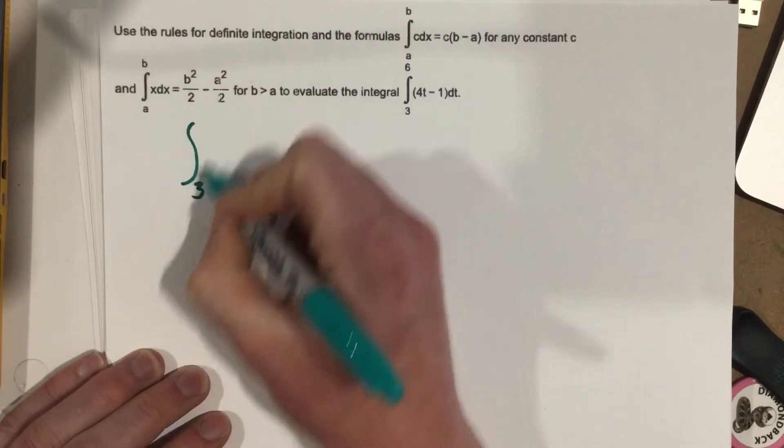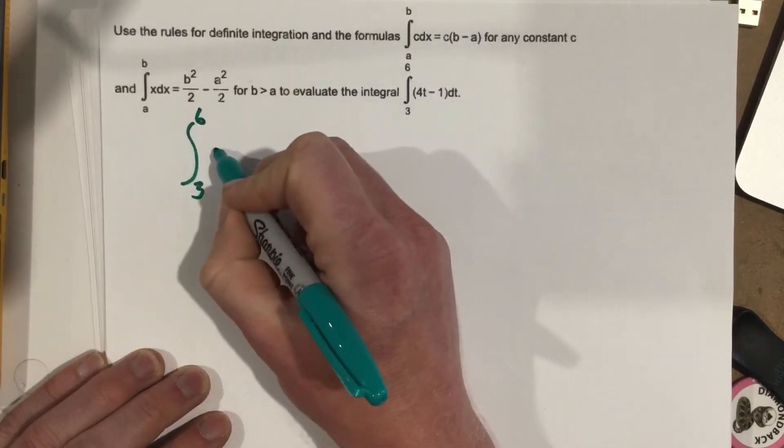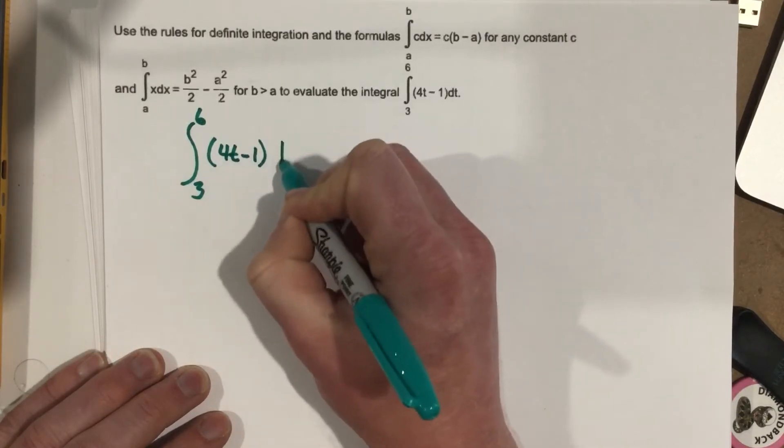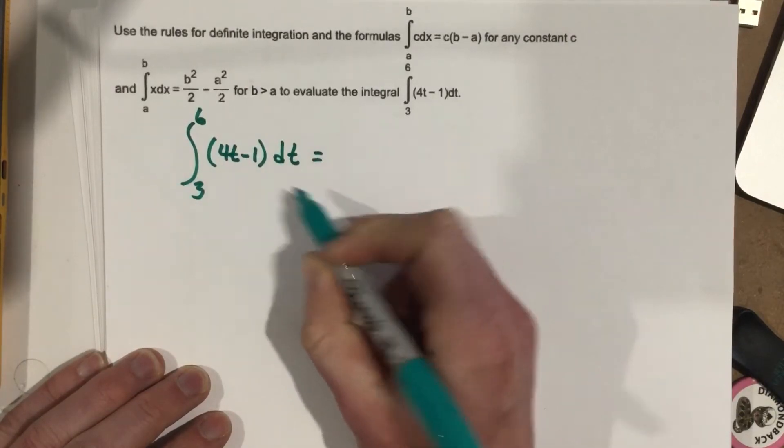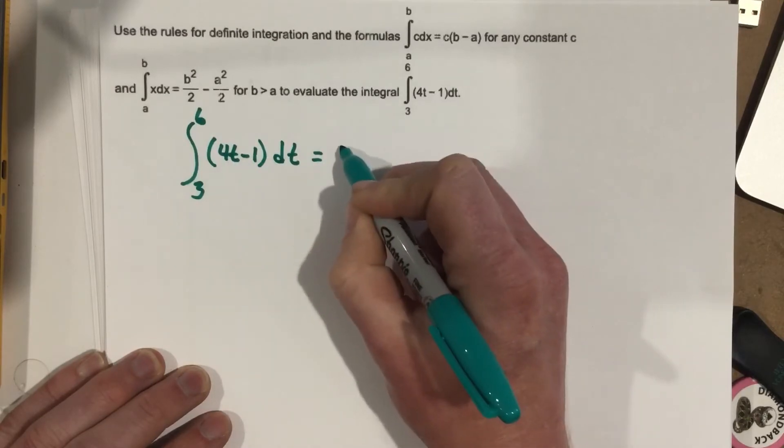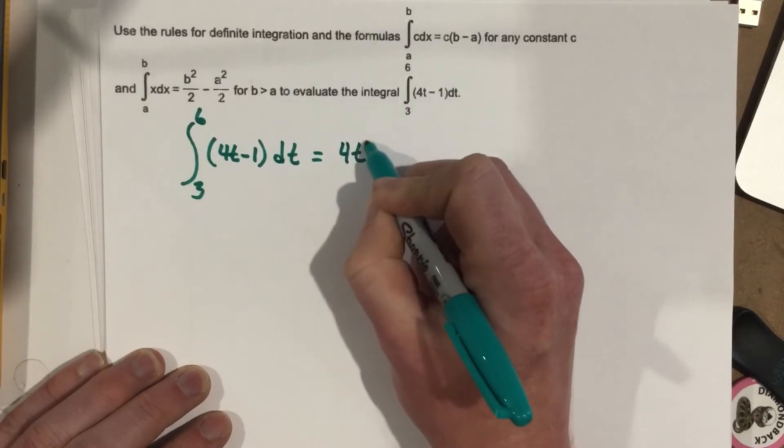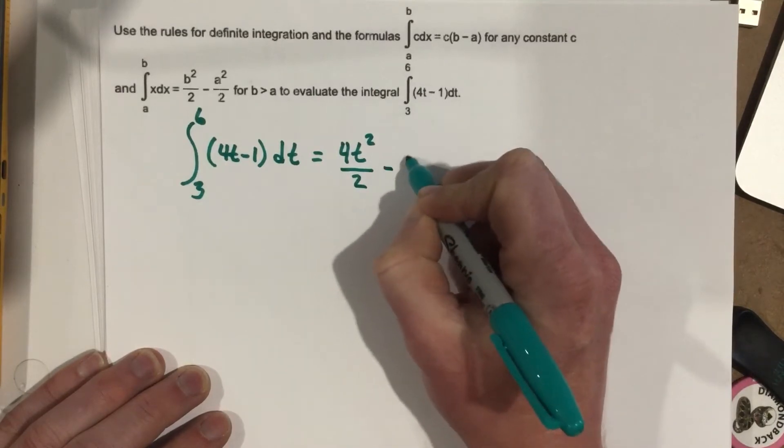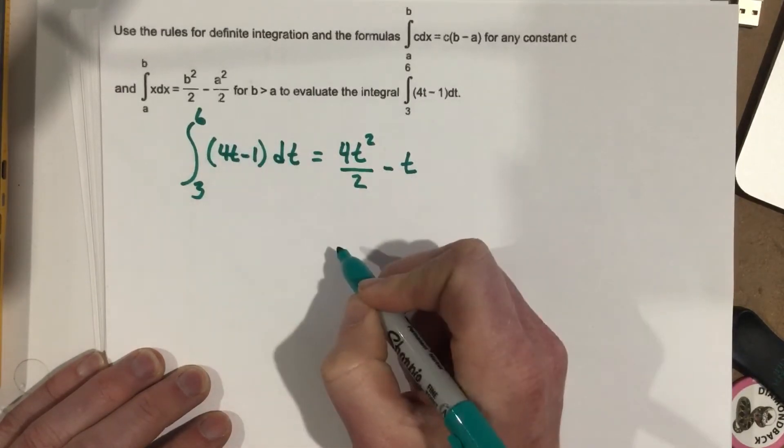Integral from 3 to 6 of 4t minus 1 with respect to t. When I do the antiderivative here, that gives me 4t squared over 2 minus t. That's the antiderivative of 4t minus 1.